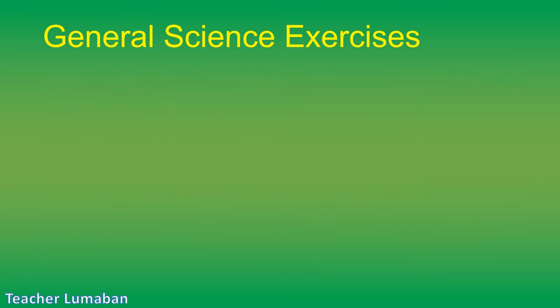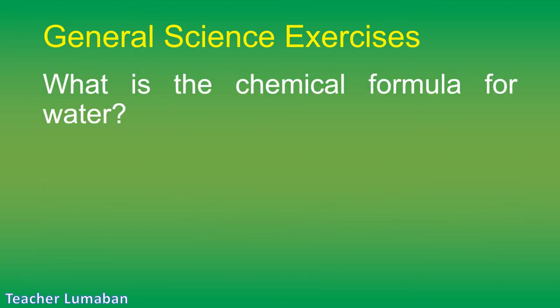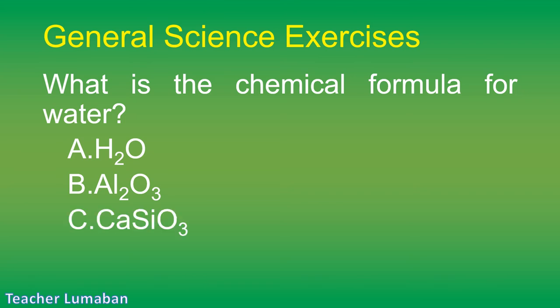What is the chemical formula for water? Letter A: H₂O. Letter B: Al₂O₃. Letter C: CaSiO₃. Letter D: NAlO₂.